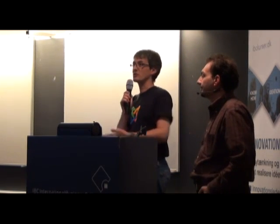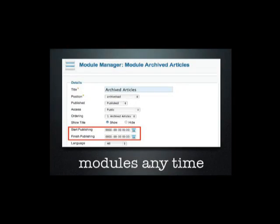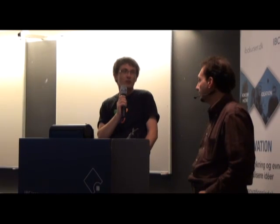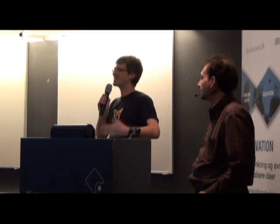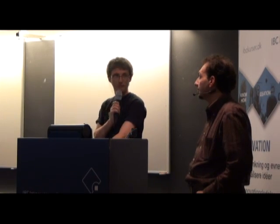Articles have always been able to set a publish start time and a publish end time, but you could never do that for modules — now you can. You create a module, like a countdown to an event on the Joomla Day DK website, and just set it to finish publishing on today's date. It was just one of those things that made sense — not a rocket science change, a very easy code change, but it just makes sense to do it.